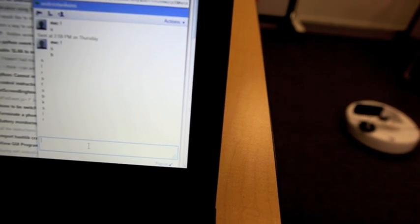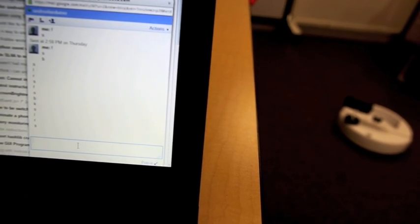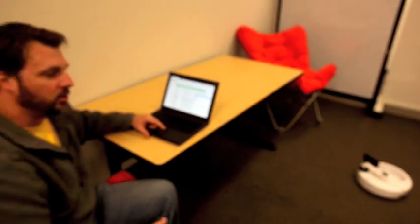So we can do F for forward, S for stop, B for backwards, L for left, R for right. And then I can just chat, and the robot can be anywhere in the world. Me and my laptop can be anywhere in the world, and talking through Google Talk.